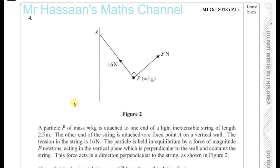It says a particle P of mass m kilograms is attached to one end of a light and extensible string of length 2.5 meters. So this string has a length of 2.5 meters. That's the length of the string.